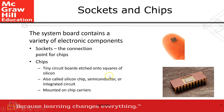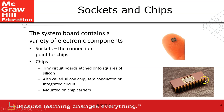Sockets and chips. The socket is basically the connection point for the chips. The chip is a tiny circuit board etched onto a square of silicon — like what you see here. It's a silicon chip, or semiconductor, also called an IC. So this is called the socket and the chips.